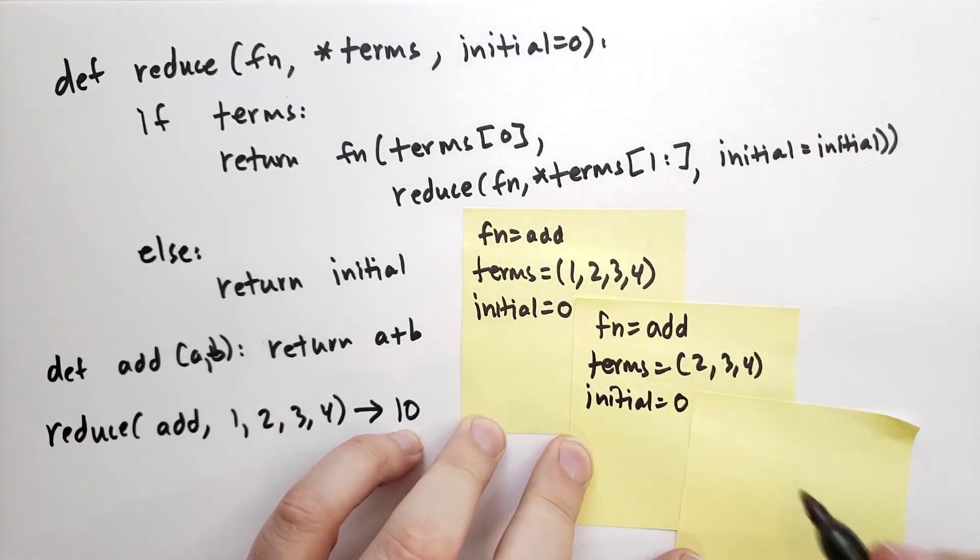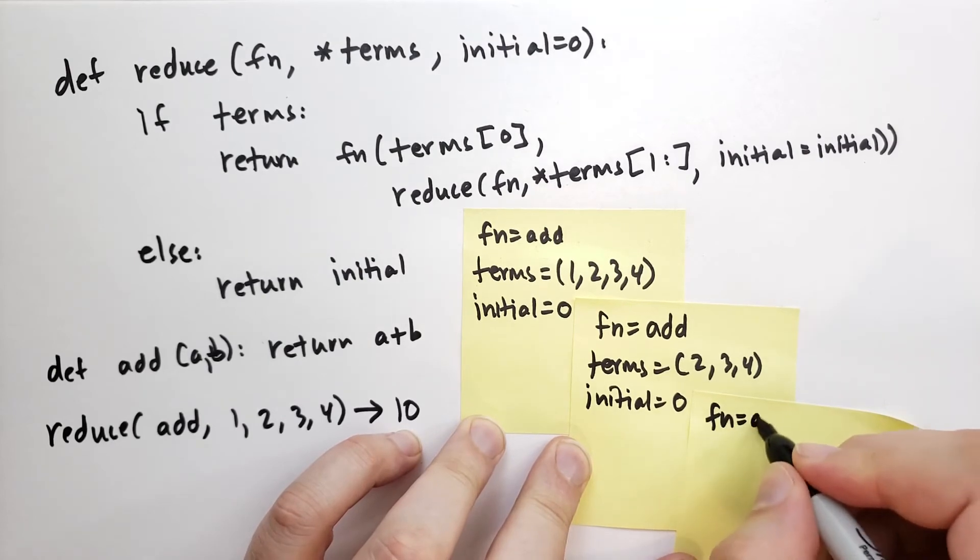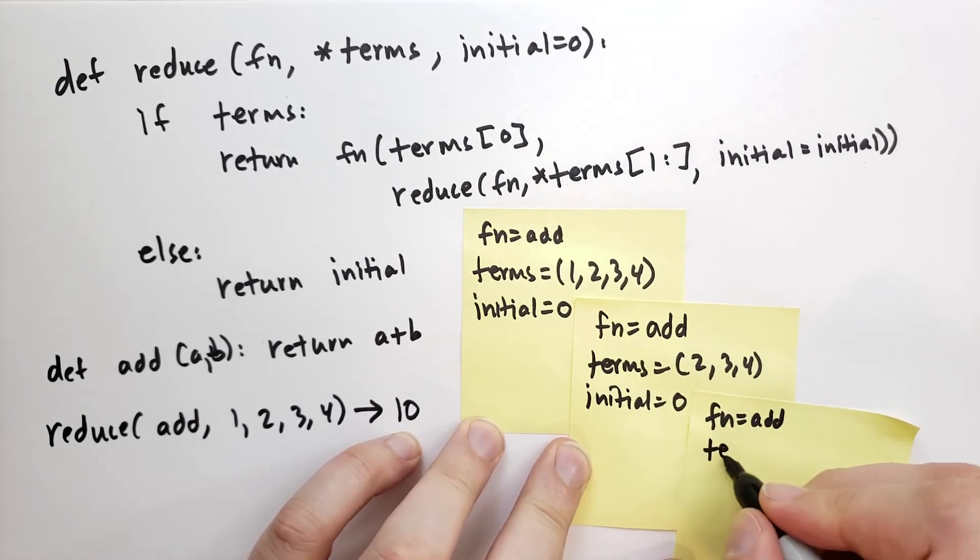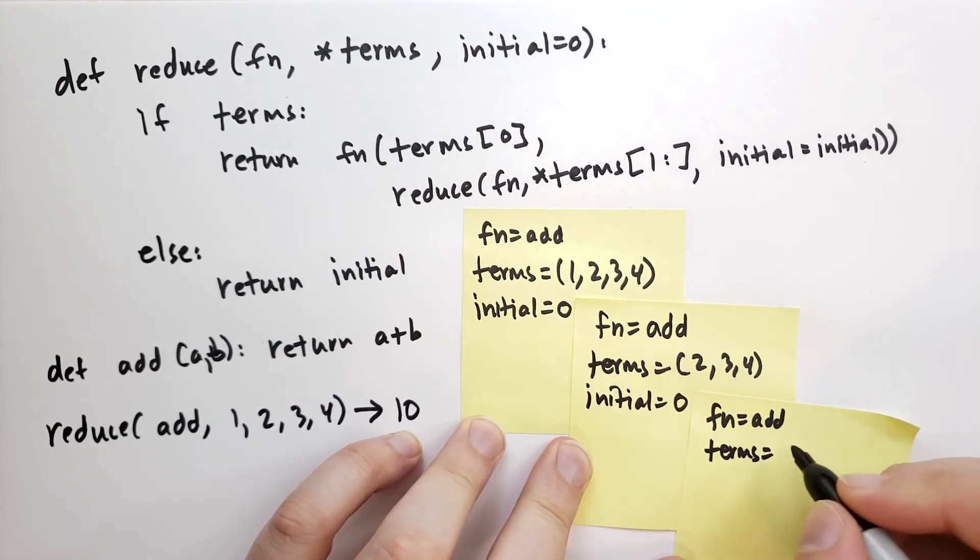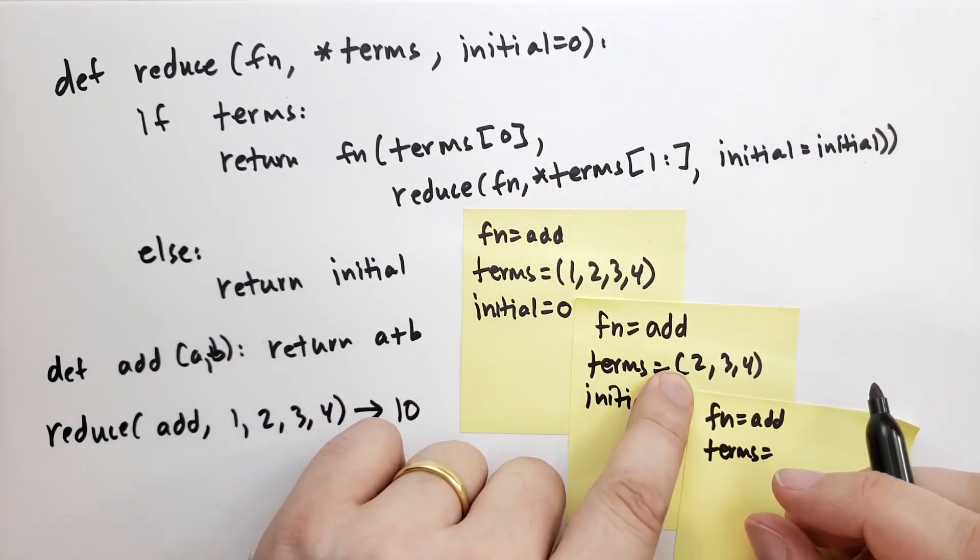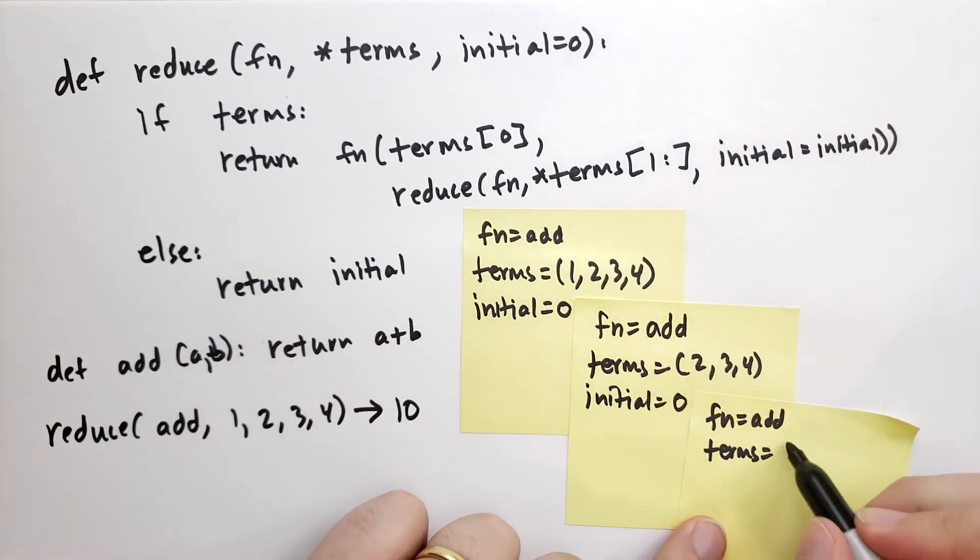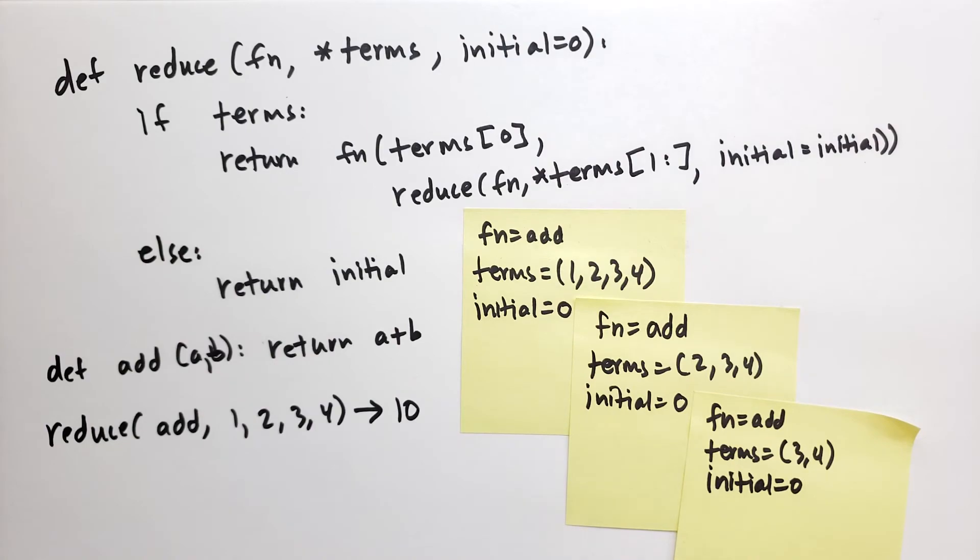This time we're going to have the function is still equal to add, and terms are this time going to be equal to the second element on, so 3, 4. Initial is still equal to 0. And let's call it again.